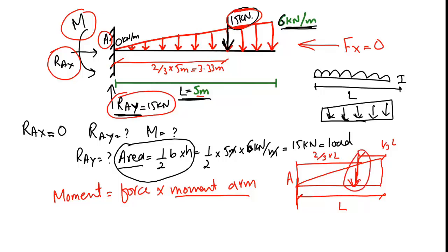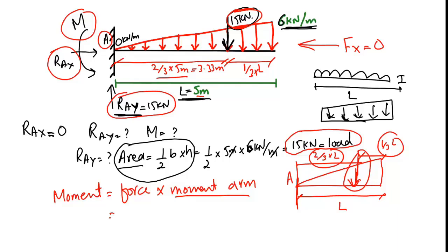The resultant load always acts at the centroid. For a uniformly varying load, the centroid is at two-thirds from one side and one-third from the other side. So the moment M_a equals 15 kN multiplied by 3.333 meters, which gives 50 kN·m.